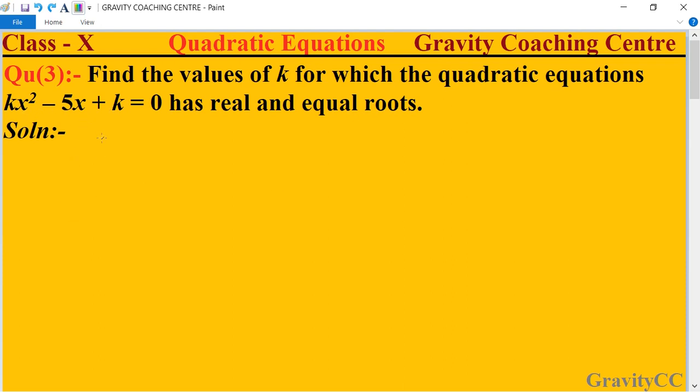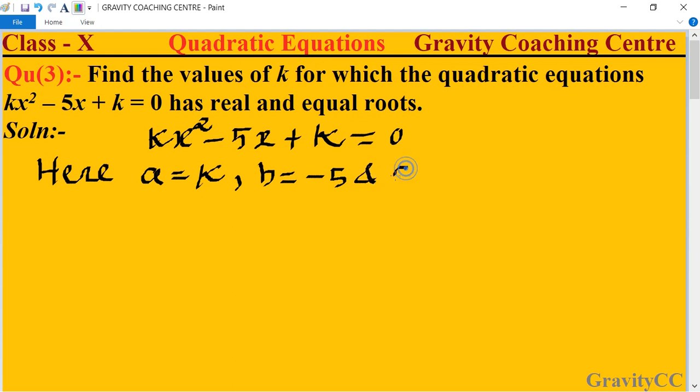In this question, a quadratic equation is given: kx² - 5x + k = 0. Here a = k, b = -5, and c = k. According to the question, it has real and equal roots.